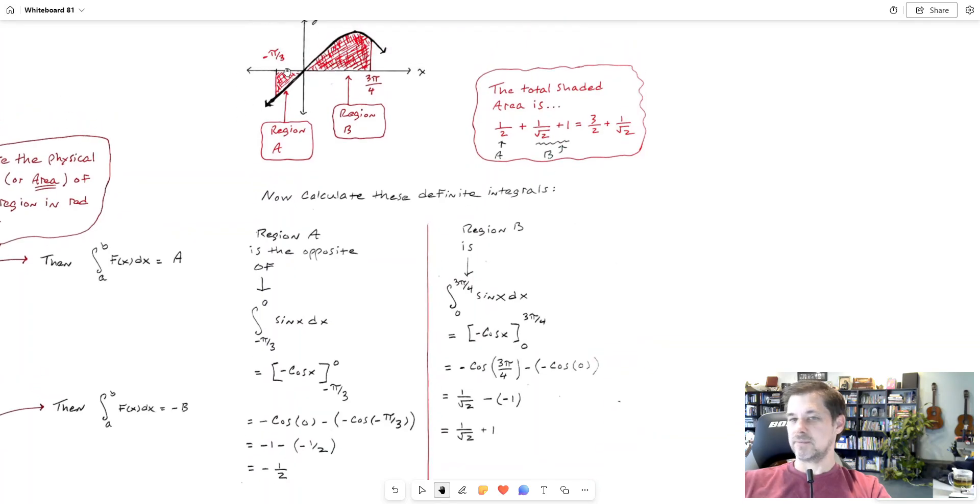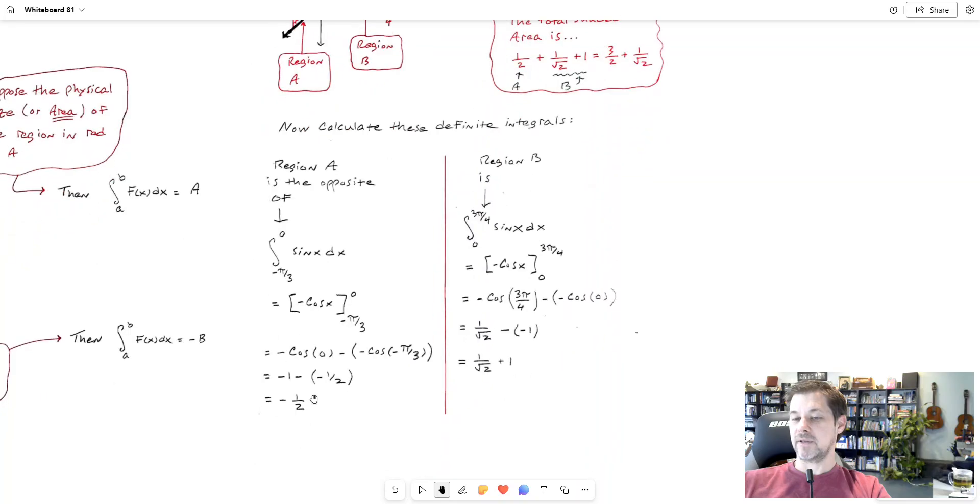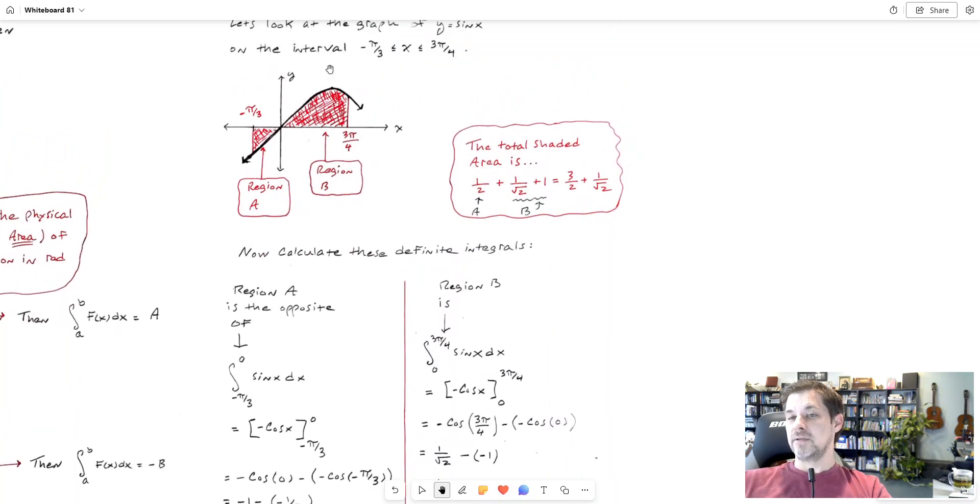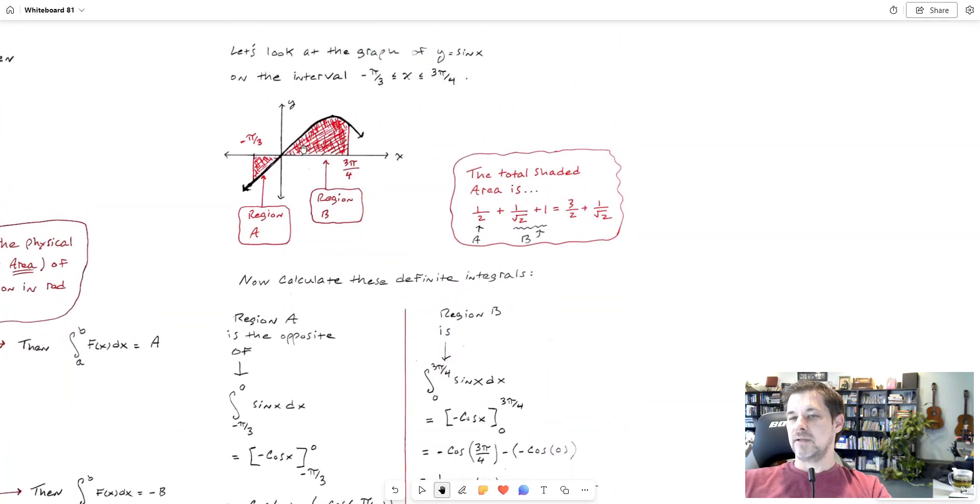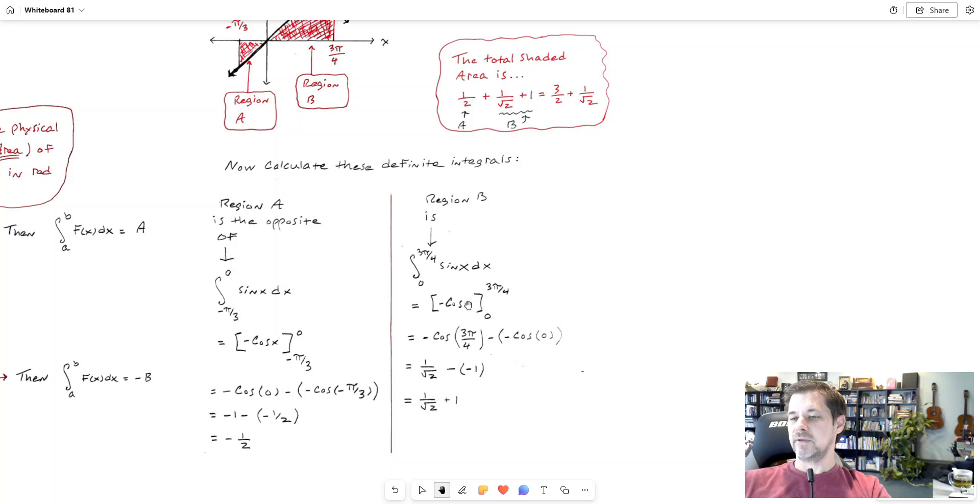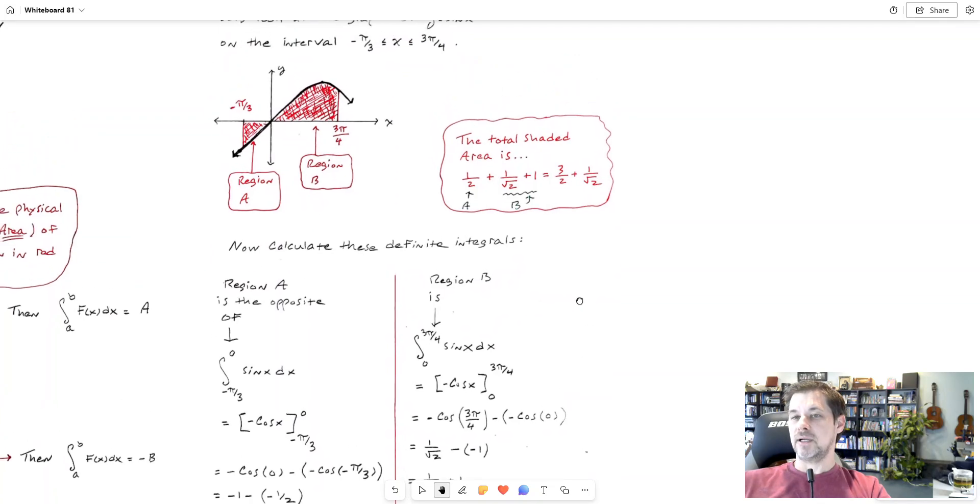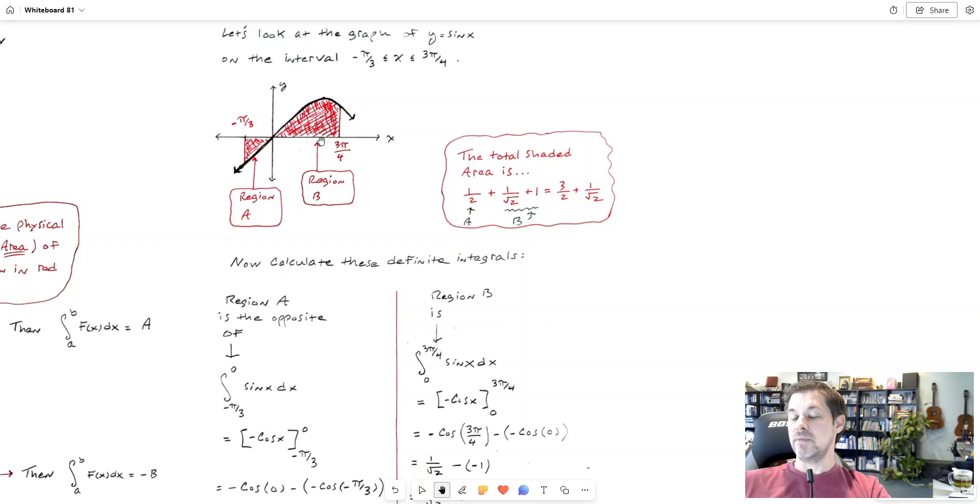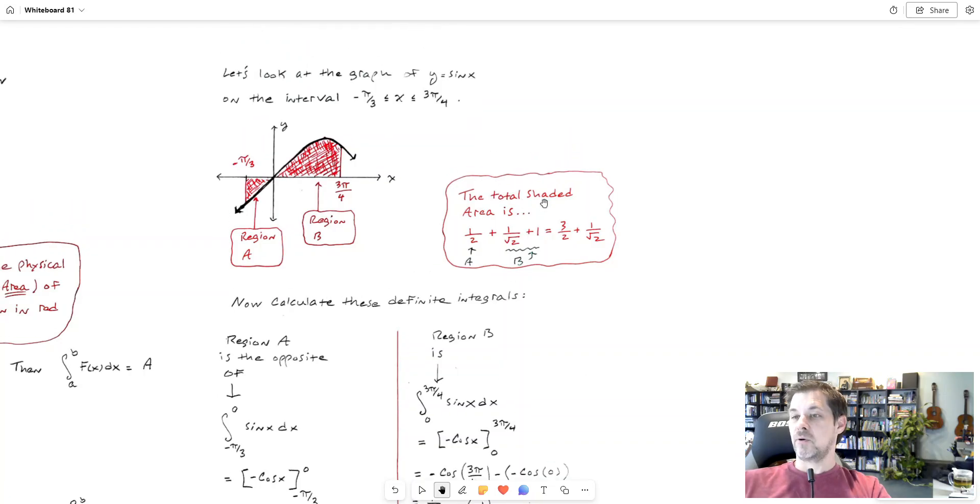What about region B? So the bounds for that are 0 to 3 pi over 4, so bounds on my integral: 0 to 3 pi over 4, sine x dx. Same antiderivative as over here, that wouldn't change. Put in my upper bound 3 pi over 4, subtract, put in my lower bound 0, calculate, I get 1 over root 2 plus 1.